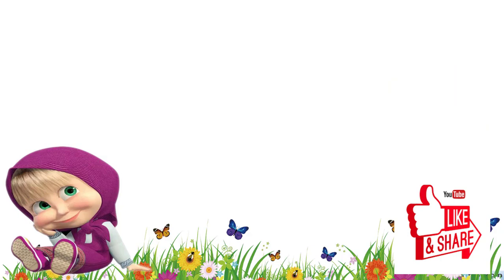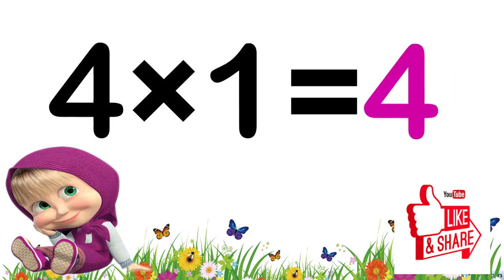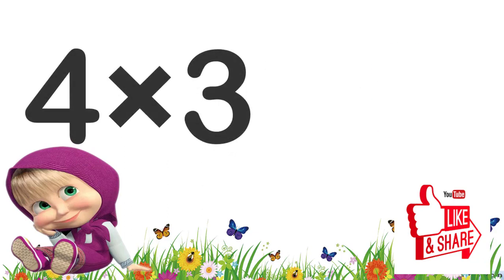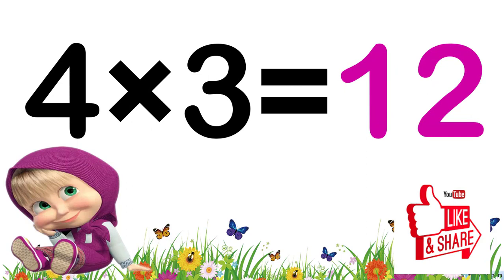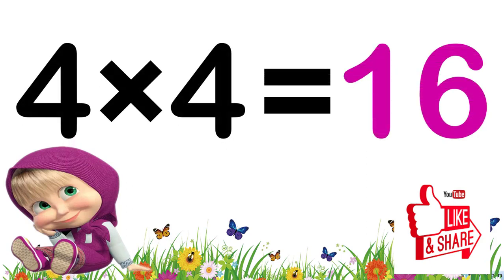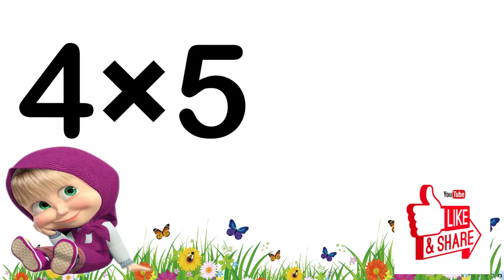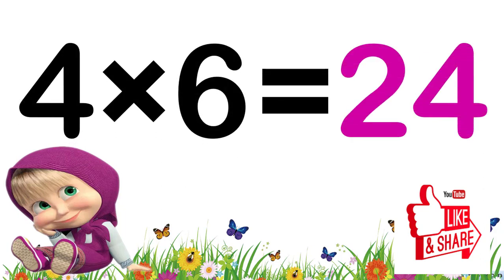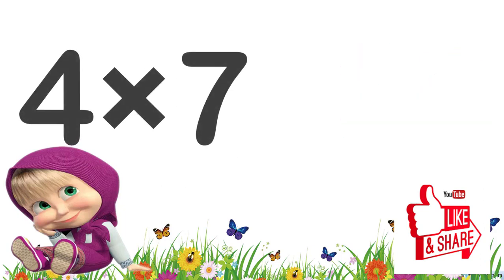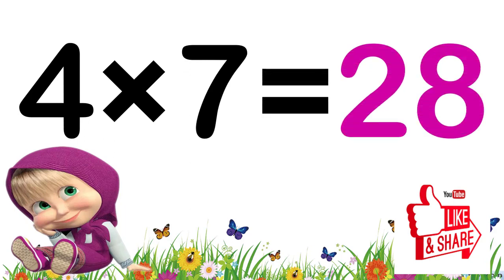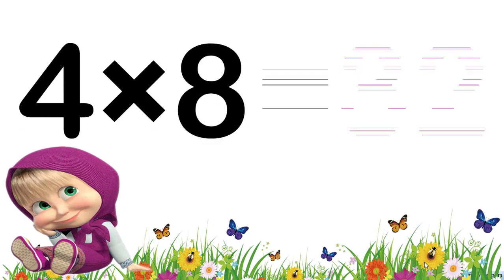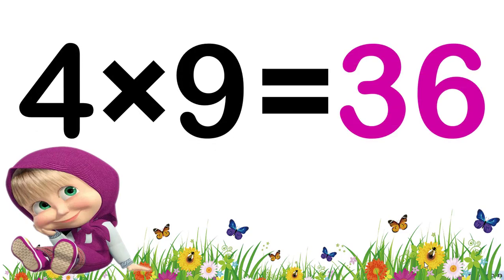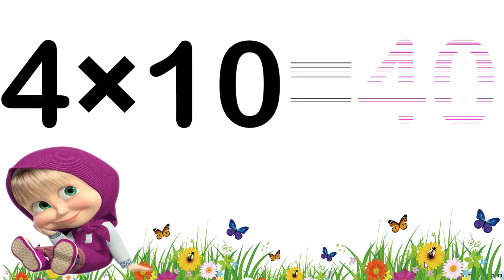Now children, let's repeat again. 4 1's are 4. 4 1's are 4. 4 2's are 8. 4 2's are 8. 4 3's are 12. 4 3's are 12. 4 4's are 16. 4 4's are 16. 4 5's are 20. 4 5's are 20. 4 6's are 24. 4 6's are 24. Four sevens are twenty-eight. Four eights are thirty-two. Four nines are thirty-six. Four tens are forty.